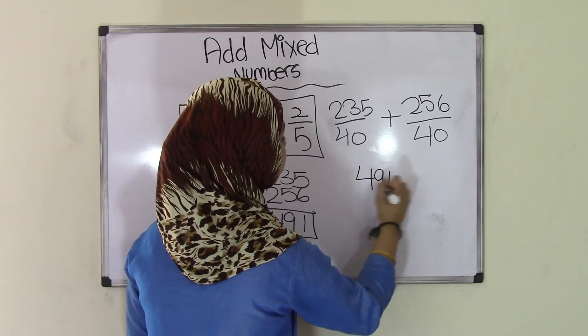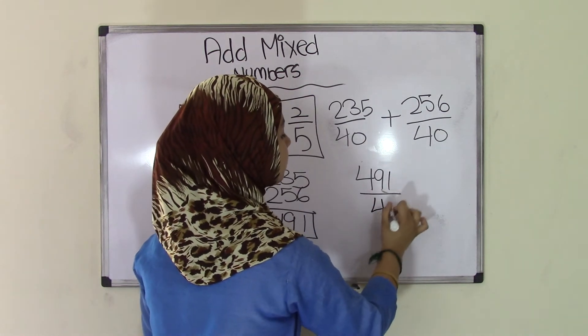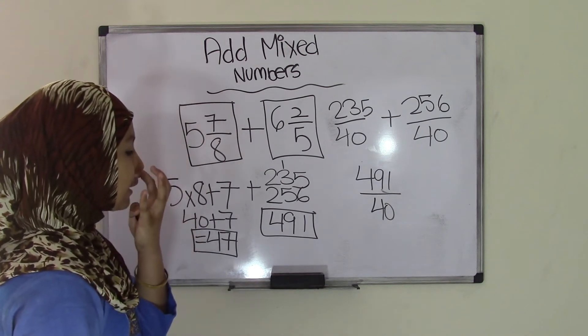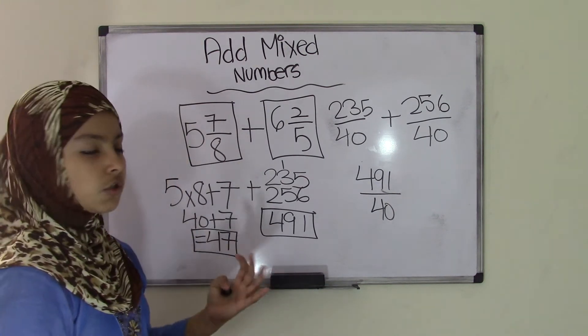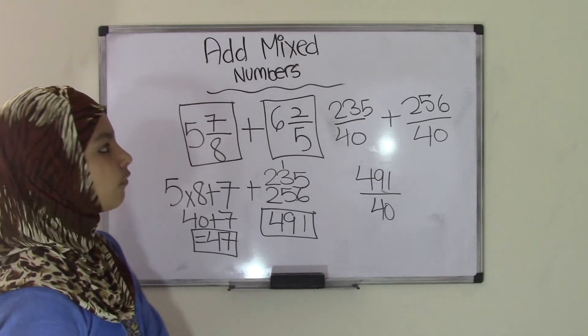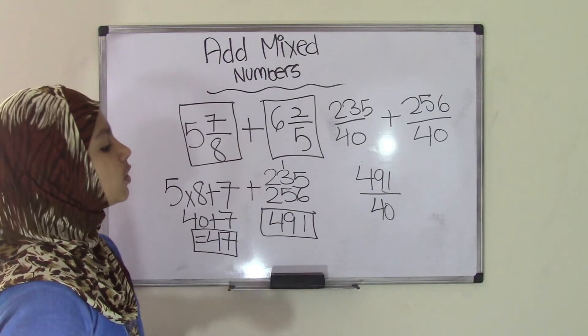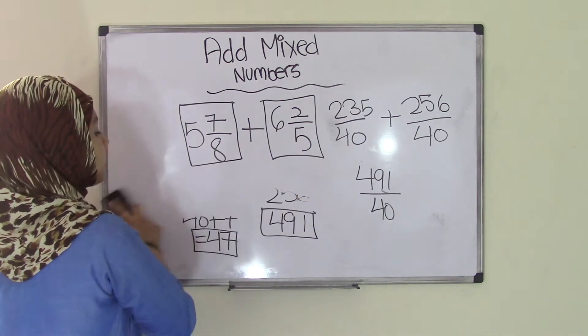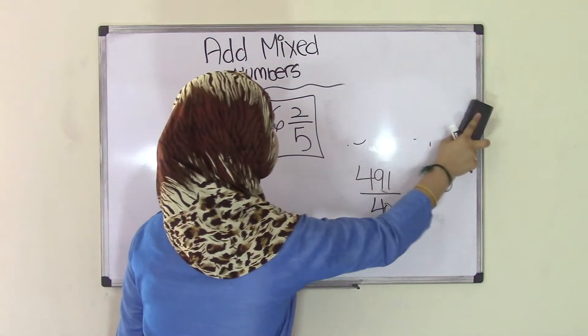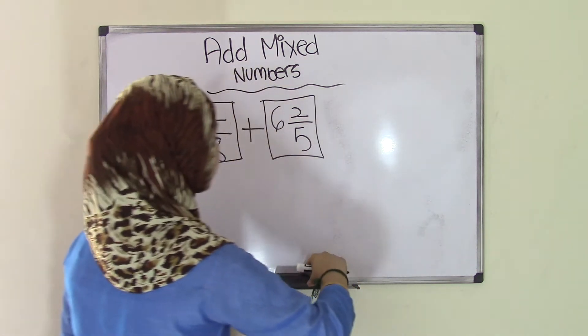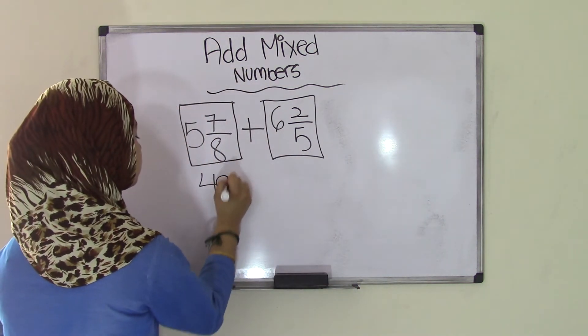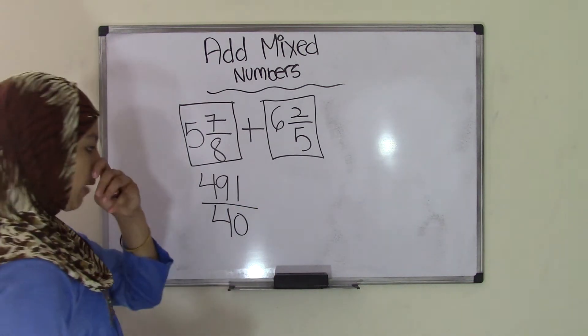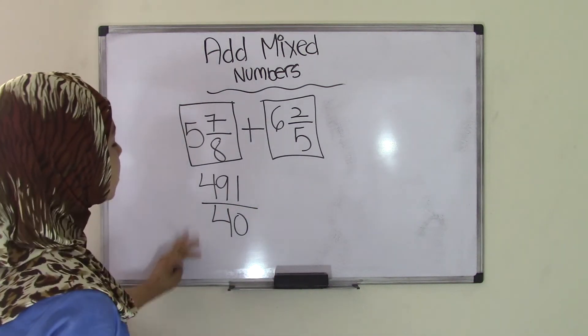Now remember, the denominator always stays the same. Now we have 491 over 40. Now remember, once you get your final answer, you can't just leave it as an improper fraction. Now you have to go back into the reverse and change this into a mixed number. So we had 491 over 40, right?